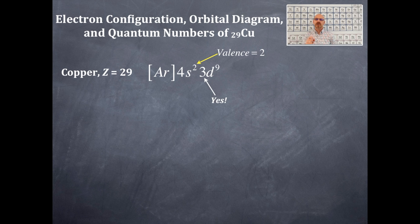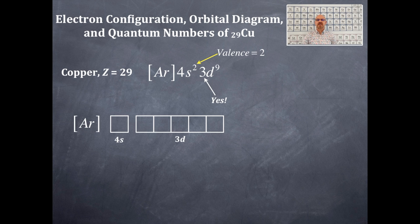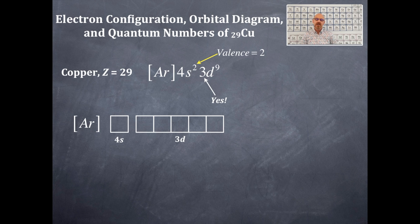Now we're going to do the orbital box diagram for copper with Z=29. We have the 4s and the 3d. The s orbitals have a single box; the d orbitals have five boxes. No matter how many electrons are in the 3d, every time you have a d, you have five attached boxes.